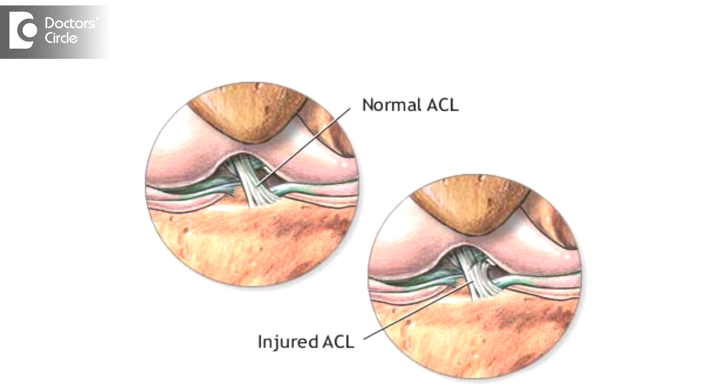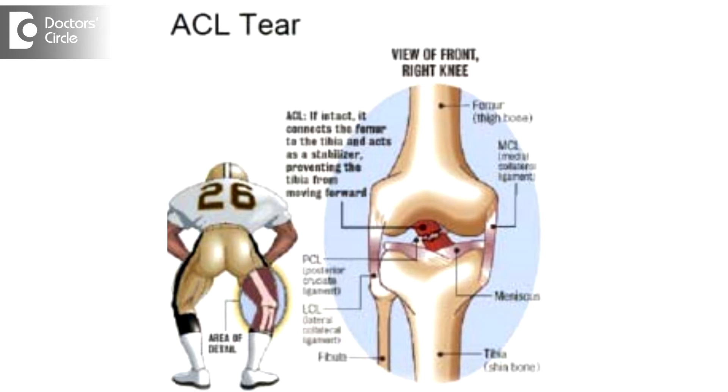History and physical examination are the most important ways to diagnose a deficient or ruptured ACL. Typically, the person would give a clear history of pivoting injury to the knee, which occurs typically with sporting activities like football, volleyball, skiing, etc., wherein there are sudden changes in direction, stopping, or jumping from a height which results in twisting injury to the knee. At the time of injury, a loud pop or a popping sensation may be felt, followed by severe pain and inability to continue activity.